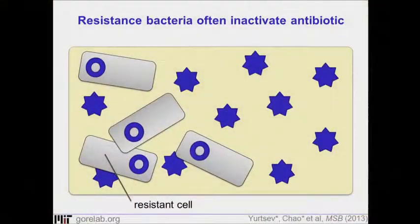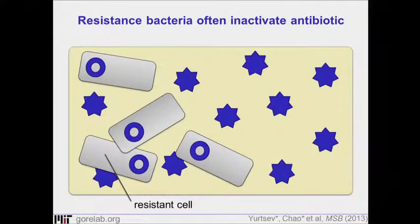Antibiotic resistance is a huge problem clinically. It's also a fascinating problem from the standpoint of ecology because if you just take a scoop of dirt from the soil, you'll see a huge range of phenotypes within the bacteria in that soil — some bacteria are resistant to antibiotics, some are not, some bacteria produce different antibiotics, others do not. So there's a question of where does this remarkable diversity come from?